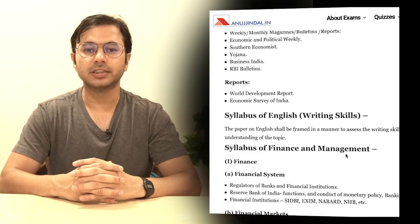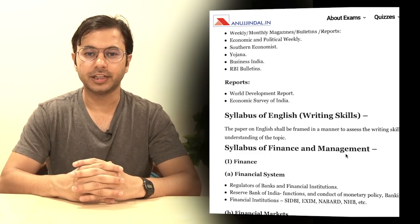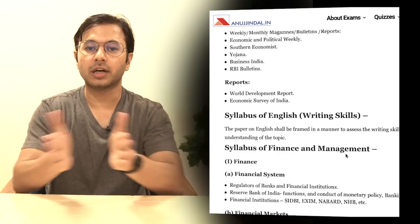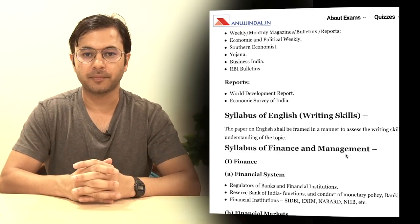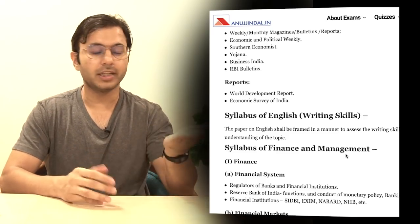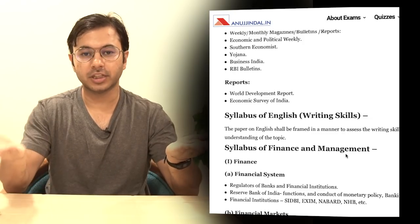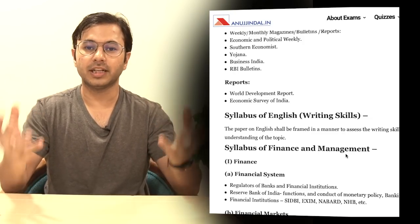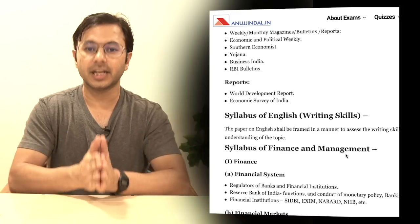Please keep in mind that phase 1 is completely qualifying in nature, and the marks of phase 2 and your interview are combined together to create a final list. Phase 2 contains a total of 300 marks and phase 3, which is the interview, contains a total of 50 marks. So the entire cut-off is created out of 350 marks. The eligibility criteria of this examination is very strict. If you want to know more about the eligibility, click on the i-card above.